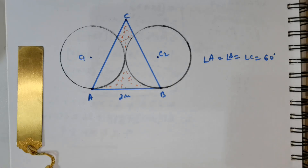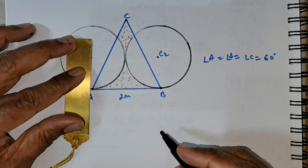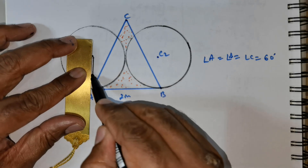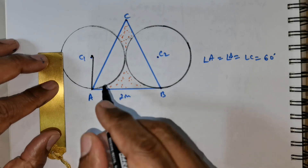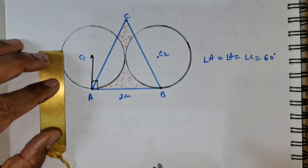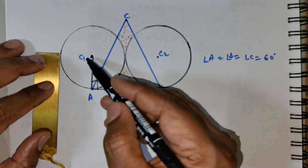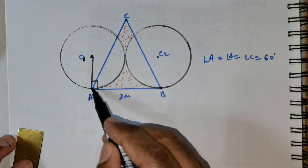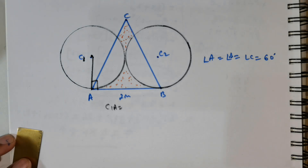We can use some theorems. The first theorem I will be using is the tangent theorem. Using the tangent theorem, if you were to drop a perpendicular from the center to the tangent, it would make an angle of 90 degrees — that is the first point you need to know. Now let me find what C1A is — this is the line segment drawn from the center to the tangent.